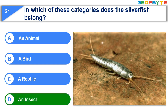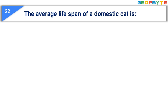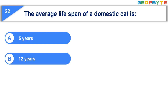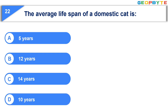Option D: An insect. The next question is: The average life span of a domestic cat is — Option A: 5 years. Option B: 12 years. Option C: 14 years. Option D: 10 years. Your time starts now.